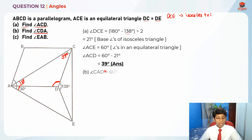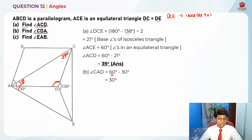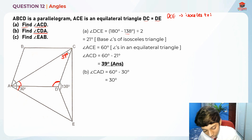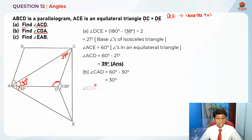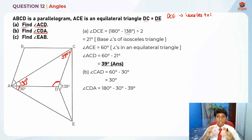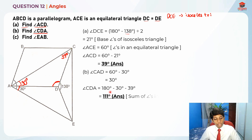To find angle CDA, we take 180 degrees minus 30 degrees minus 39 degrees. Why 180 degrees? Because 180 degrees is the sum of all angles in a triangle. So we take 180 degrees minus the two known angles to get angle CDA. The answer is 111 degrees.